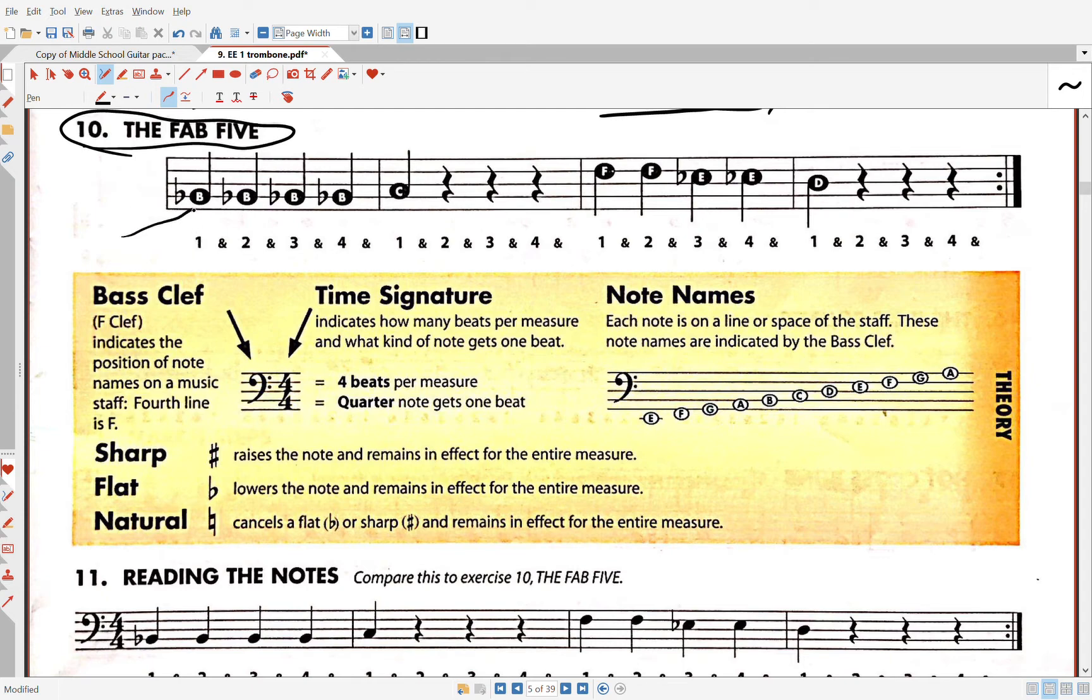This is a B-flat. It's a B-flat because it's on the second line, not the first line. Notice this note is on the second line. You don't know it's a B-flat because you see a B inside the note head - you know it is a B because it's on the second line.